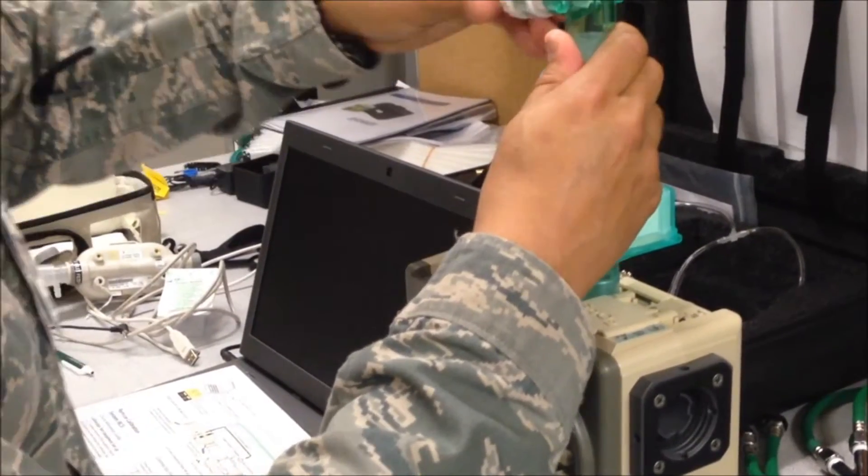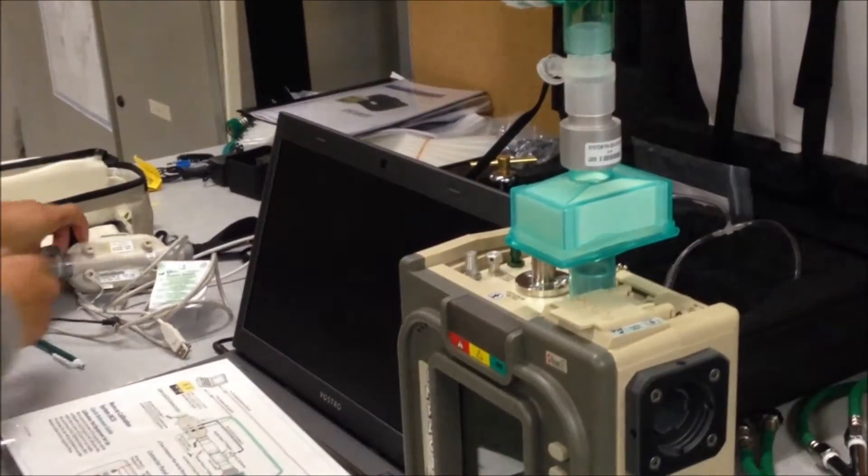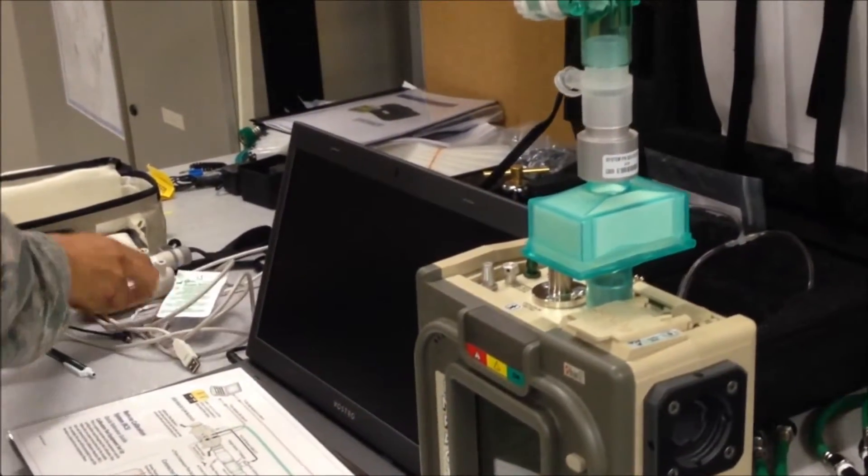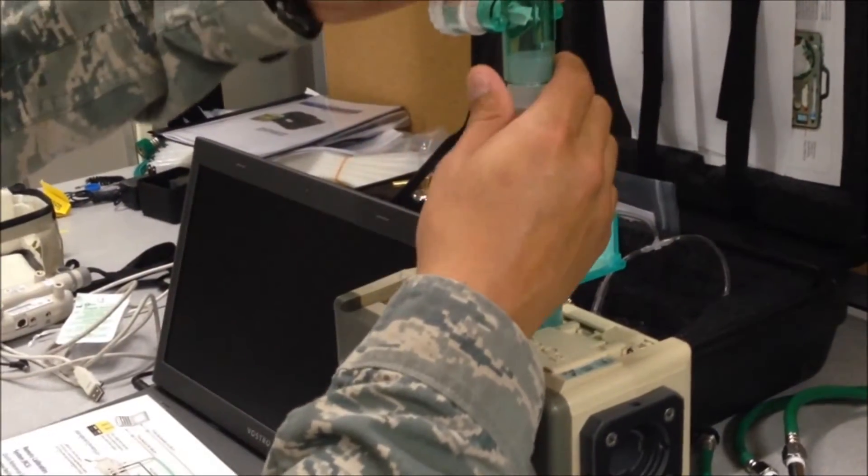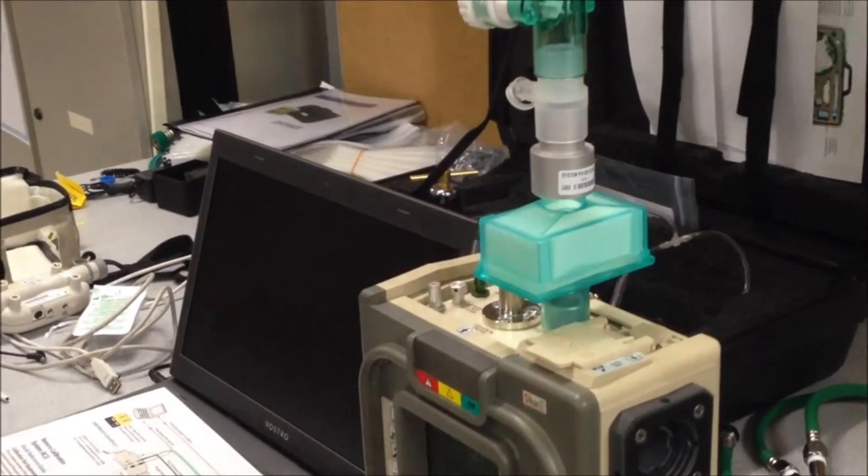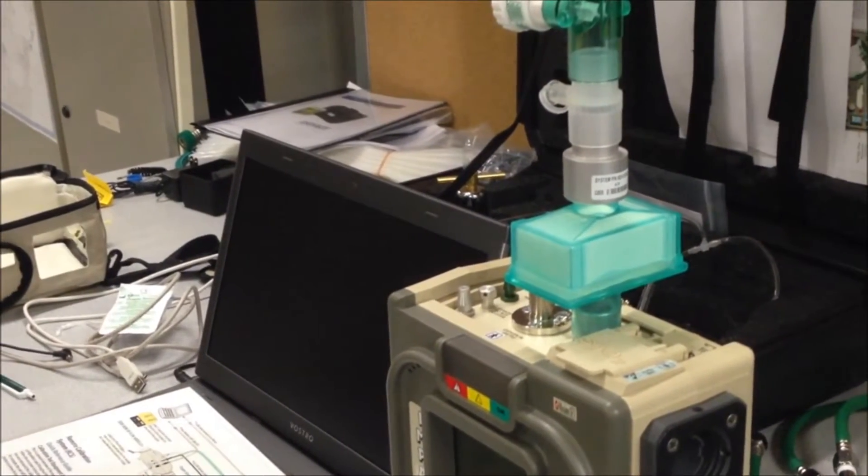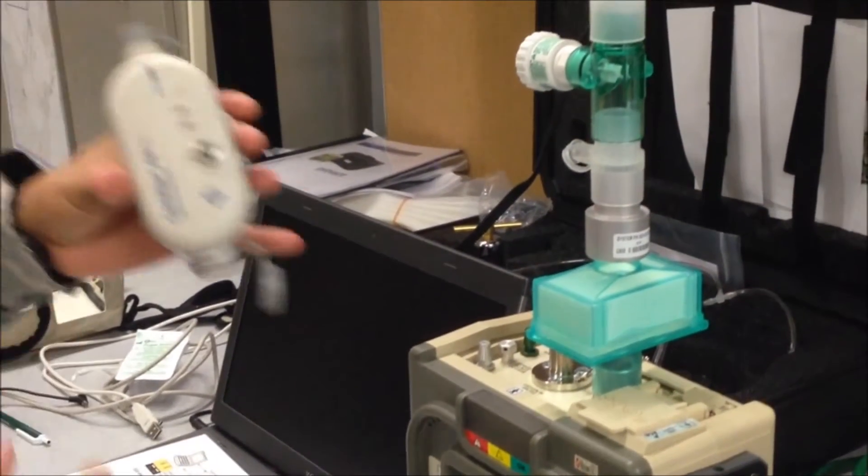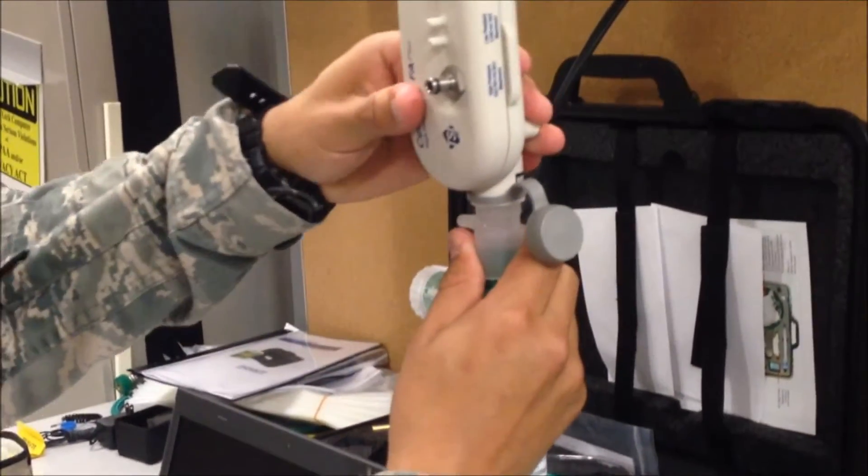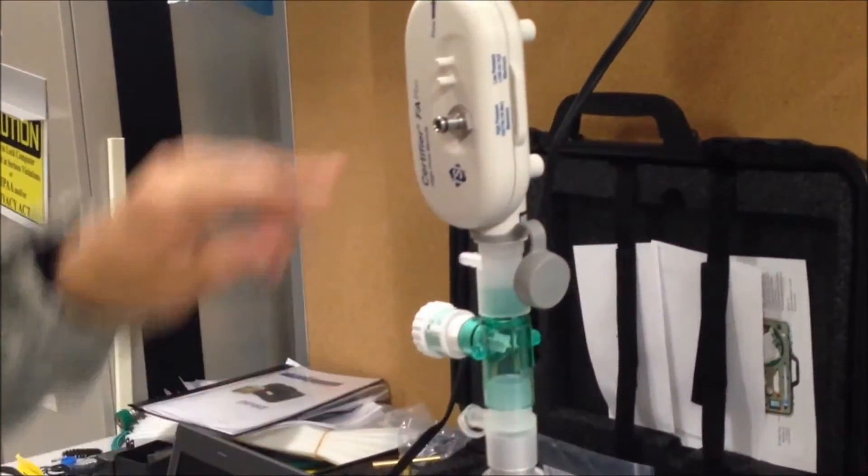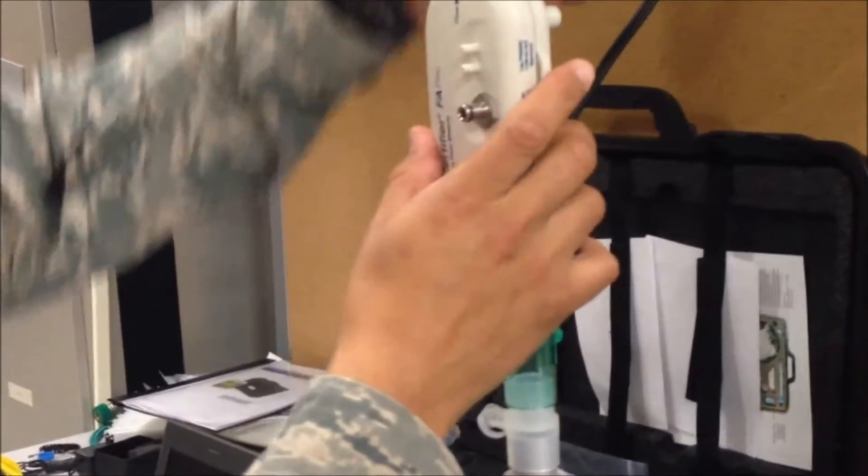Connect the airway pressure tubing and your calibration flow module. Make sure that when connecting, the flow line points up.